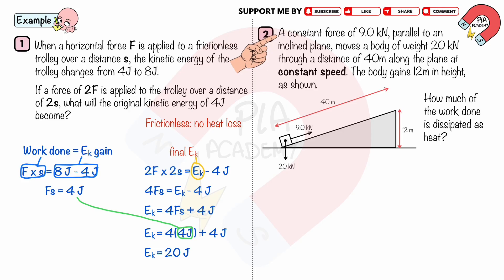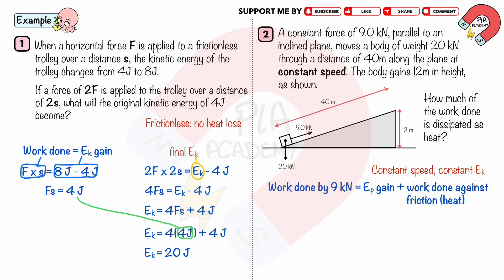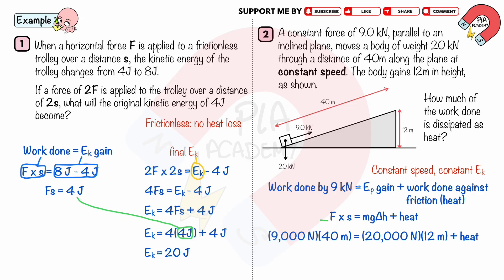Work example 2. A constant force of 9.0 kilonewtons, parallel to an inclined plane, moves a body of weight 20 kilonewtons through a distance of 40 meters along the plane at constant speed. The body gains 12 meters in height. How much of the work done is dissipated as heat? The box moves at constant speed, so its kinetic energy remains the same. The work done by the 9 kilonewtons force equals the gravitational potential energy gain plus work done against friction. Substituting F equals 9000 newtons, Mg equals 20,000 newtons, and delta H equals 12 meters, we solve the dissipated heat equals 120,000 joules.